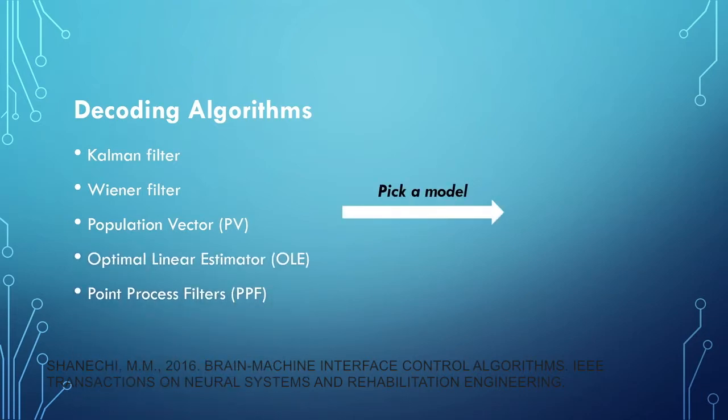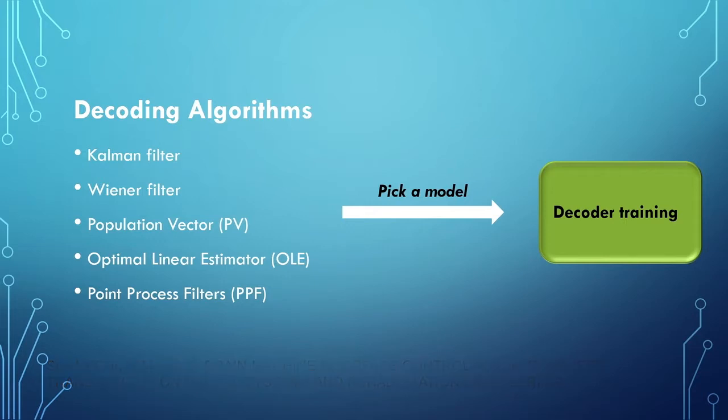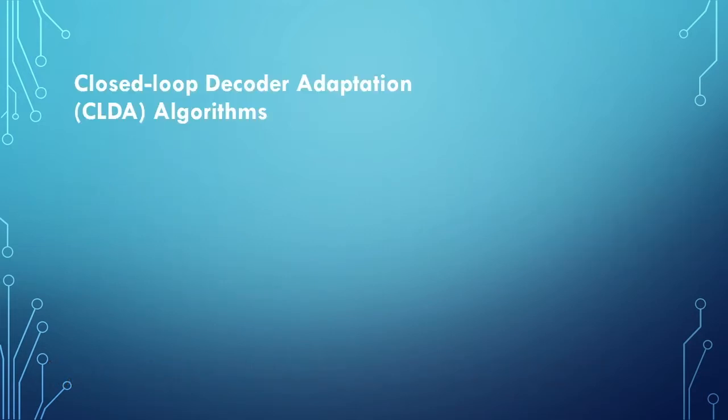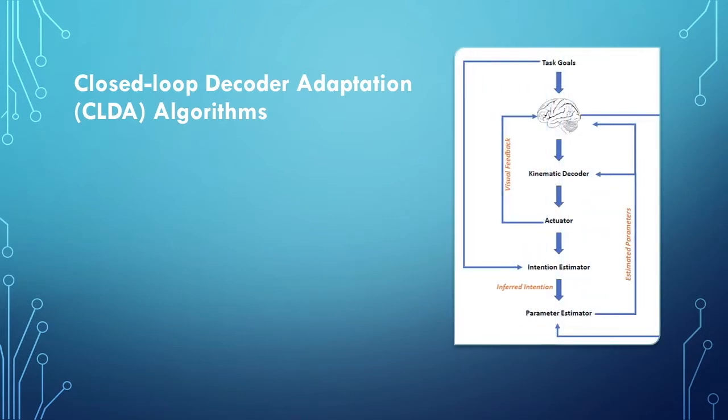Once we select a decoding model, the next step is to train the decoder. As the decoding algorithms in recent years have been steered by a closed-loop control view of BCI, the decoder is trained in closed-loop. Such training methods are called closed-loop decoder adaptation or CLDA algorithms. The CLDA process includes three steps as shown in the figure: decoder initialization, intention estimation for the user, and parameter estimation for the decoder.